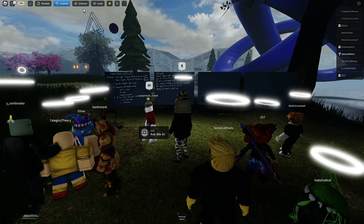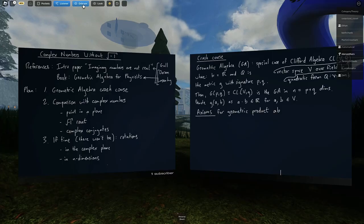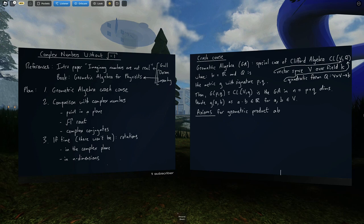Welcome everybody. This talk is entitled Geometric Algebra in Two Dimensions: complex numbers without the square root of minus one.